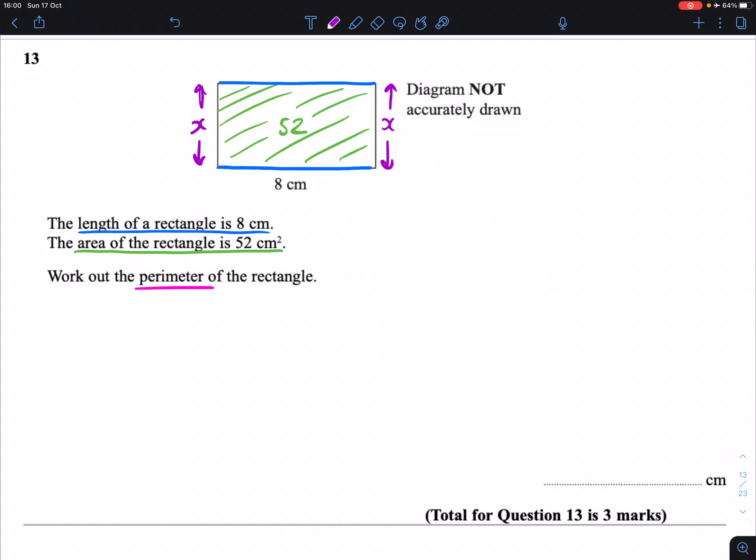So then you would have to look at what information did the question give us and why might they do that. Now they've given us this area of 52 to help us then get x, to help us then get the perimeter.